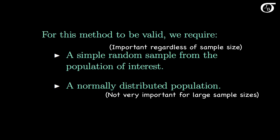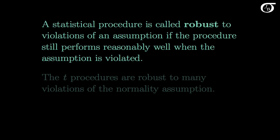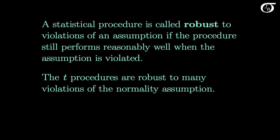What happens if the population from which we are sampling is not normal? A statistical procedure is called robust to violations of an assumption if the procedure still performs reasonably well when the assumption is violated. Robustness is a very good property for a statistic to have, because very often the assumptions are not perfectly true. The good news is the t procedures are robust to many violations of the normality assumption, meaning they work well even when we are sampling from a distribution that is not normal.